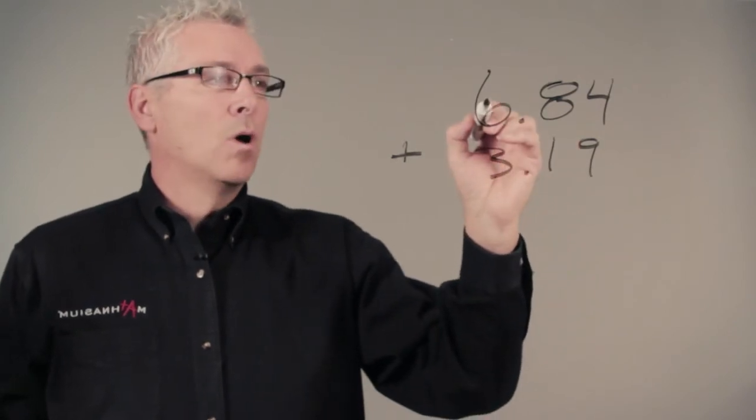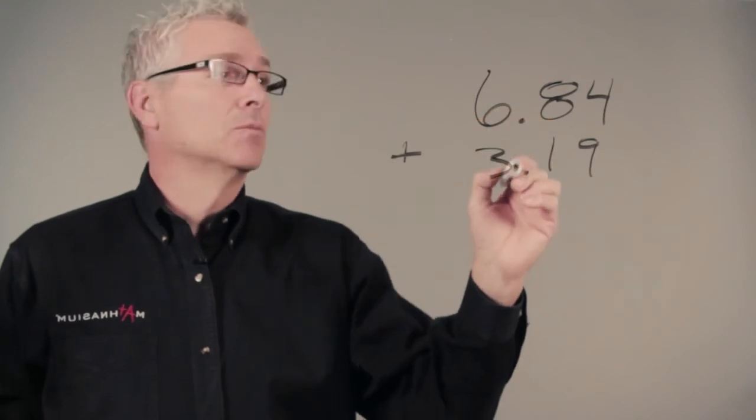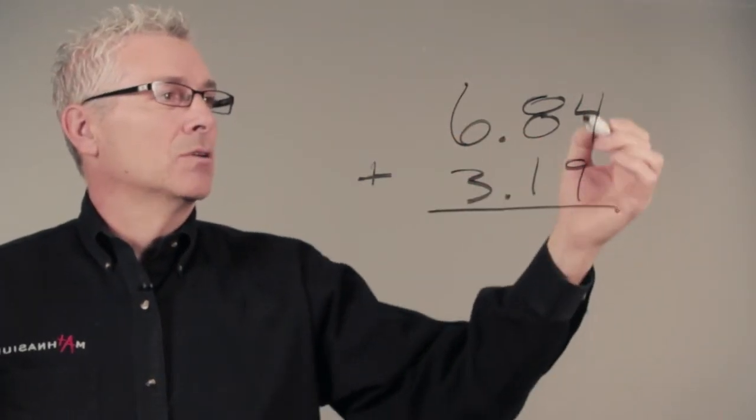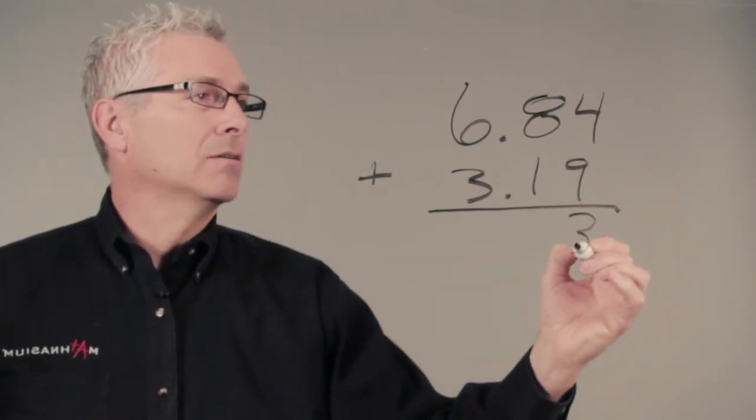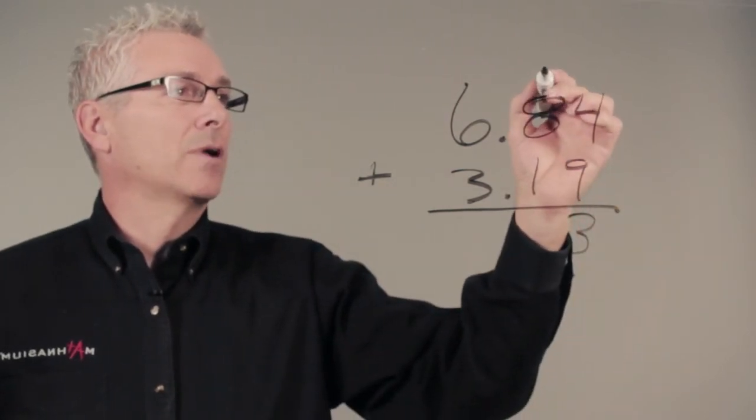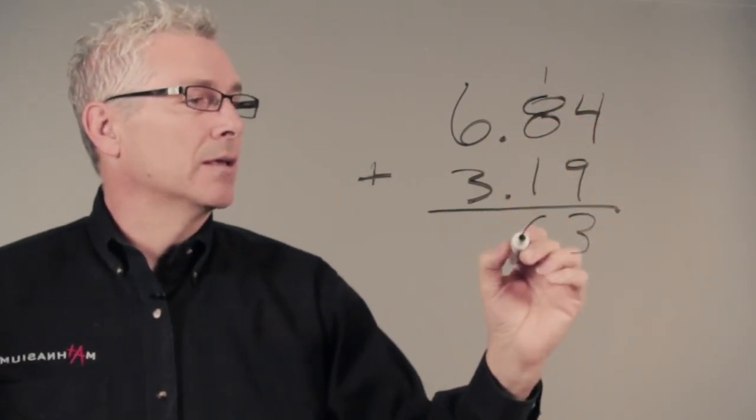The ones are on top of the ones, the decimals on top of the decimal. We add those decimal places, so 9 plus 4 is 13. We take our 3 down and we carry our 1, just as if we were adding. 8 plus 1 plus 1 is 10.